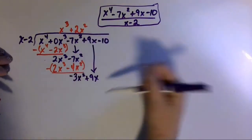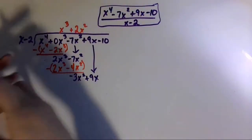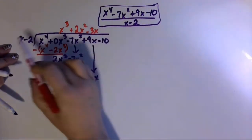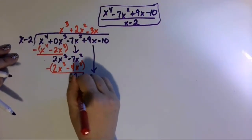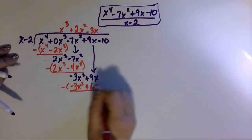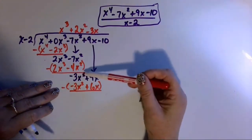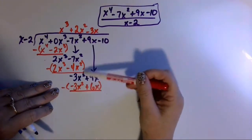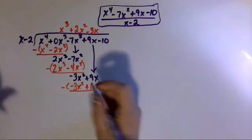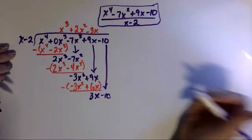That gives negative 3x squared, and then plus 9x when we bring down the next term. Repeating again: what do we multiply times x to get negative 3x squared? That would be negative 3x. Multiply: negative 3x times x is negative 3x squared; negative 3x times negative 2 is positive 6x. Draw a line, change the signs, and combine like terms. Negative 3x squared cancels, and 9x minus 6x is positive 3x, then minus 10 when we bring down the next term.